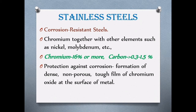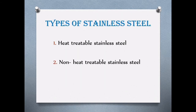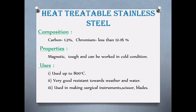The corrosion rate is very low. When chromium oxide forms on its surface, the atmospheric oxygen builds up a protective top layer. Stainless steel is basically classified as heat-treatable stainless steel and non-heat-treatable stainless steel.